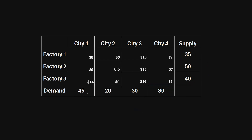The goal is to meet the demand of each city while minimizing shipping costs. The unit shipping cost from each factory to each city is provided. For example, the cost from factory one to city one is $8, and from factory one to city two it's $6. We want to minimize the total shipping cost.